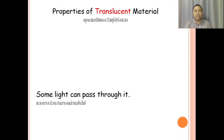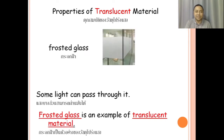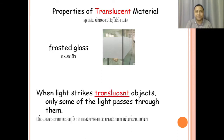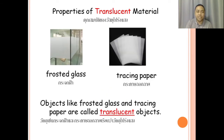Properties of translucent material. Translucent material allows some light to pass through it — so some light can pass through it. For example, a frosted glass. A frosted glass is an example of translucent material. When light strikes translucent objects, only some of the light passes through them. Objects like frosted glass and tracing paper are called translucent objects.